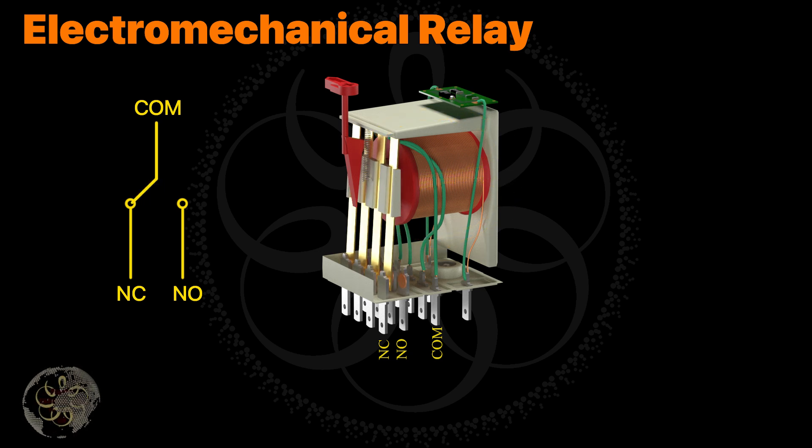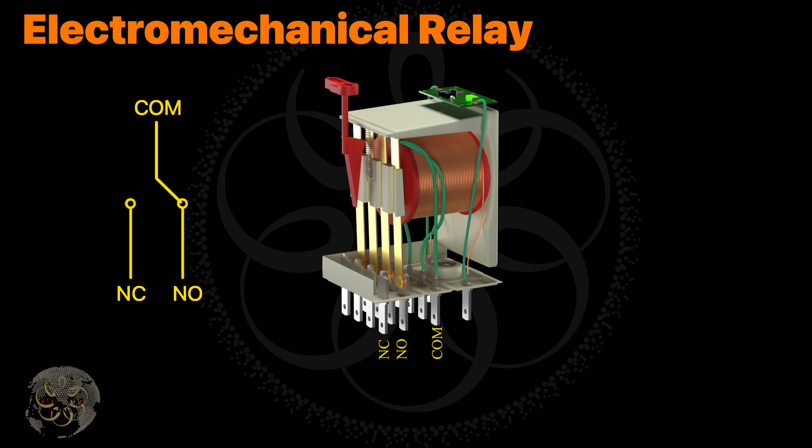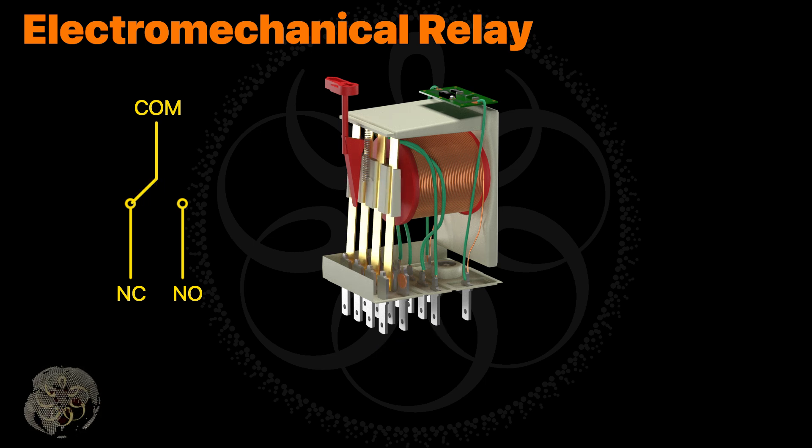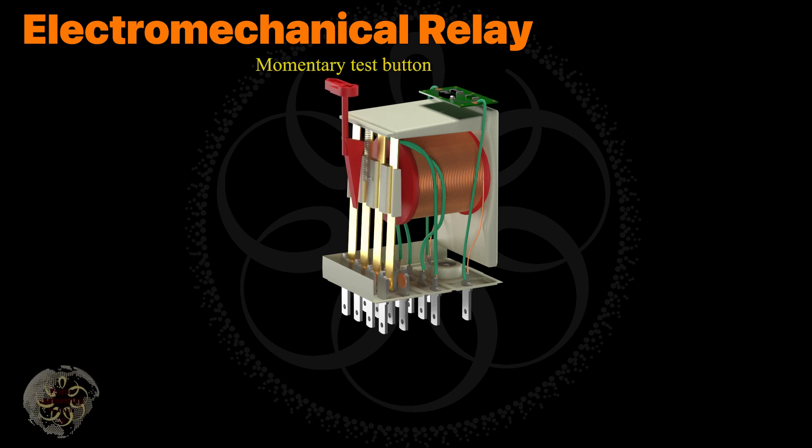Once the current stops, a spring pushes the armature and contacts back to their original position. Some relays include a momentary test button that allows you to manually change the contact state while the button is pressed.